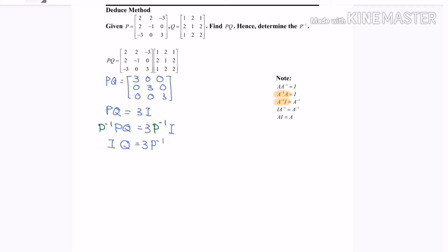So now I'm going to rearrange the equation, so P inverse will be equals to 1 over 3 Q I. Now again refer to the notes on the right hand side. I multiply Q, okay, I multiply A inverse we have A inverse, so in this case I multiply Q we will have Q.